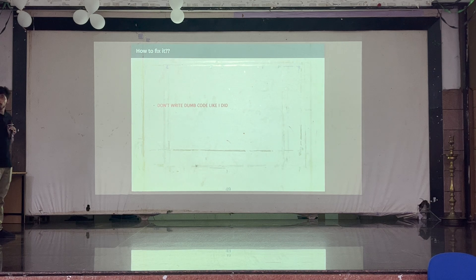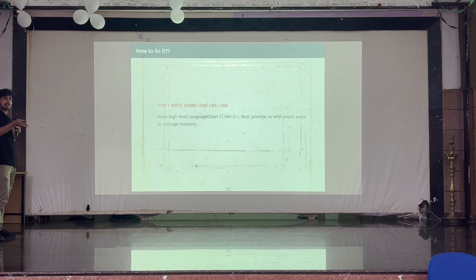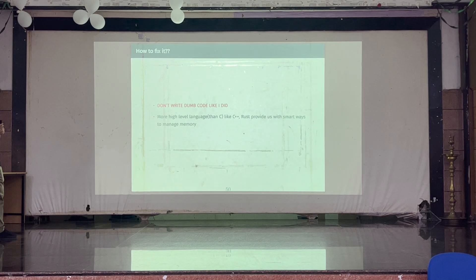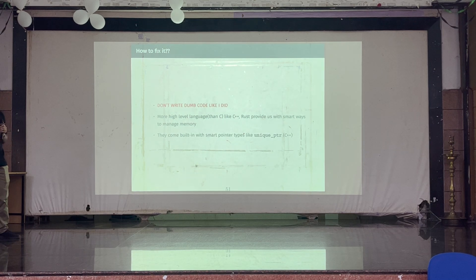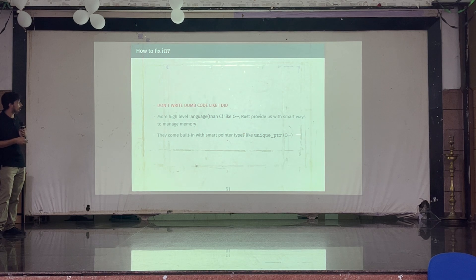How do we fix this? Don't write careless code. Whenever you are doing memory management, think carefully before writing code — plan where the variable goes out of scope and where to free it. Sometimes even that won't be enough because there will be many paths you can't trace manually. So try to write code in a higher-level language like C++ or Rust. Languages like C++ and Rust come with something called smart pointers.